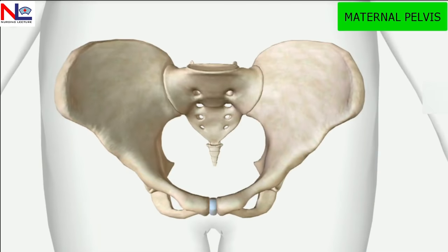In this lecture we have seen how the maternal pelvis creates a bridge between the axial skeletal and the appendicular skeletal system, and how its diameters are adapted for childbirth. Thank you for watching this video; you can subscribe to our channel and visit our site.